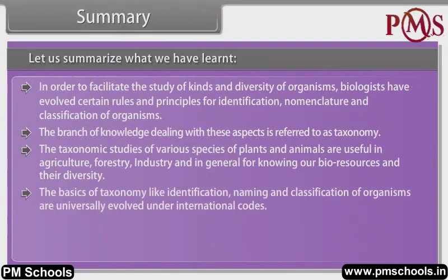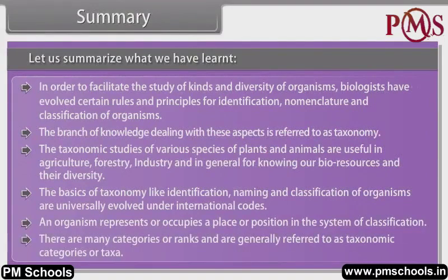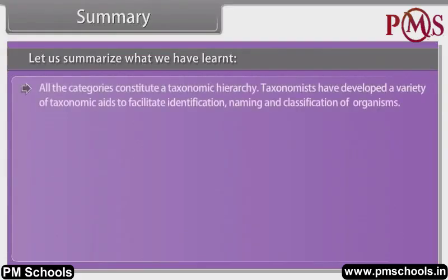The basics of taxonomy like identification, naming and classification of organisms are universally evolved under international codes. An organism represents or occupies a place or position in the system of classification. There are many categories or ranks, generally referred to as taxonomic categories or taxa. All the categories together constitute a taxonomic hierarchy.